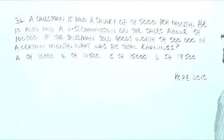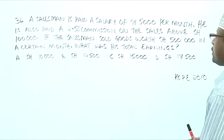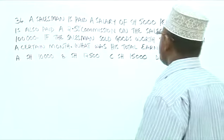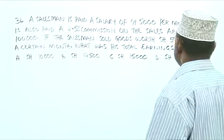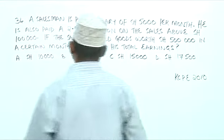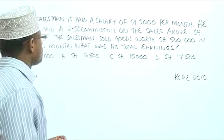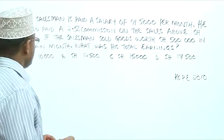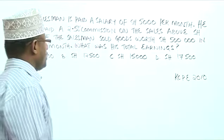A salesman is paid a salary of $5,000 per month. He's also paid a 2.5% commission on the sales above $100,000. If the salesman sold goods worth $500,000 in a certain month, what was his total earnings?